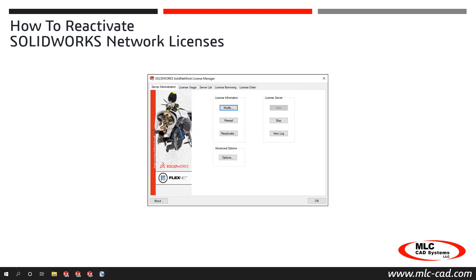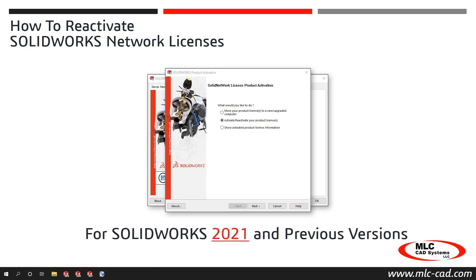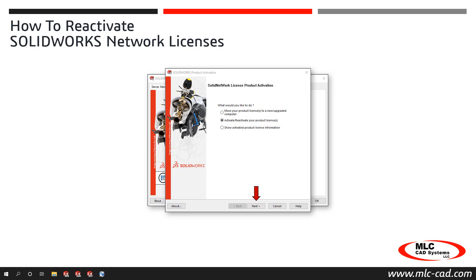For older versions of SolidWorks, from the Server Administration tab, select Modify to launch the activation dialog. In the newly opened SolidWorks product activation dialog, choose the option Activate/Reactivate Your Product Licenses and then click Next.